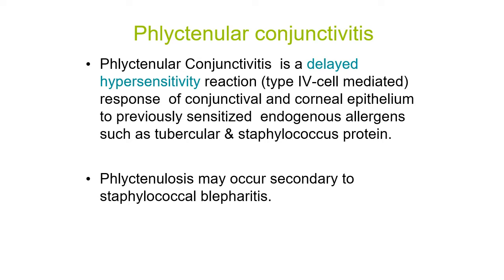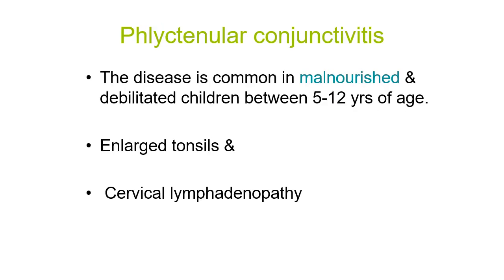In allergic conjunctivitis, first there is sensitization, then reintroduction of the allergen, and then a heightened response. There can be a tubercular or staphylococcal protein that comes in contact with the conjunctiva, causing sensitization. On reintroduction, a delayed type 4 cell-mediated reaction causes the conjunctivitis. There is another condition called phlyctenulosis secondary to staphylococcal blepharitis — when there is inflammation of the lid due to staphylococci, there is affection of the conjunctiva.